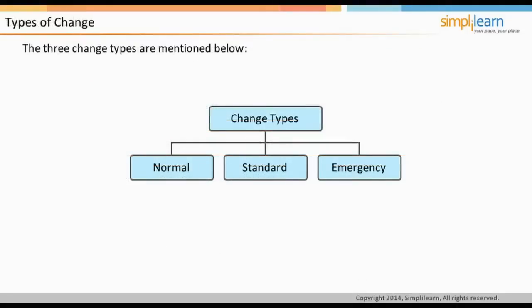The three change types or models are normal change, standard change, and emergency change. A normal change follows all steps of the change process and is assessed by the change manager and approved by the Change Advisory Board. A standard change is a pre-approved change that has low risk, is relatively common, and follows a defined procedure — for example, password reset or provision of standard equipment to a new employee. Emergency changes must be addressed quickly, for example to resolve a major incident or implement a security patch. The organization uses an advanced process for handling emergency changes, and they should be kept to a minimum as the impact and failure chances are higher.